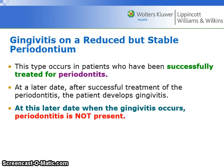Gingivitis on a reduced but stable periodontium occurs in patients who have been successfully treated for periodontitis. At a later date, after successful treatment, the patient develops gingivitis. At this later date, when the gingivitis occurs, periodontitis is not present.